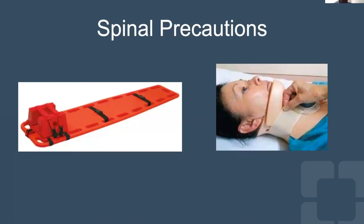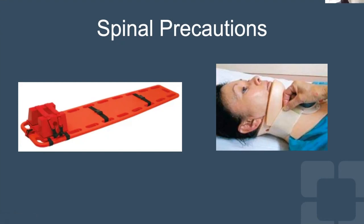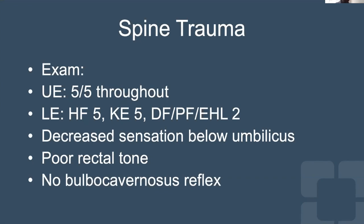When a patient comes in with suspected spinal injury, the key thing is to protect the spine — in particular the cervical spine. The patient is placed on a rigid flat board with the head secured between pillows, and then placed in a rigid cervical collar — a Philadelphia collar. This temporizes the patient in the immediate short term before any further surgical steps are needed.